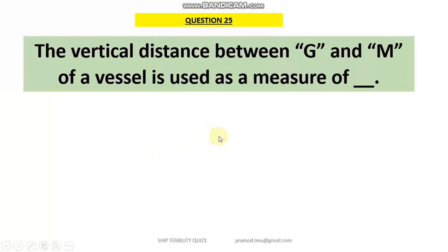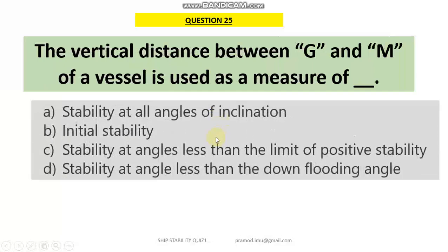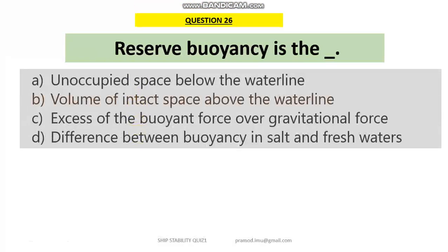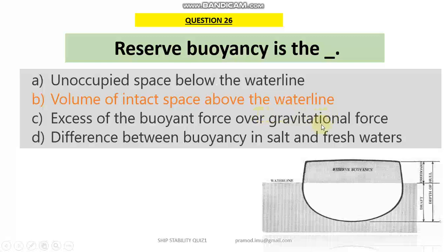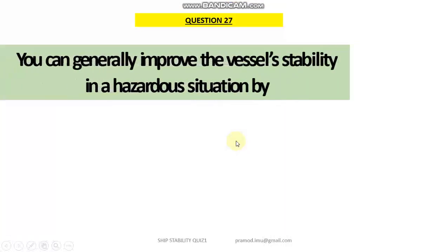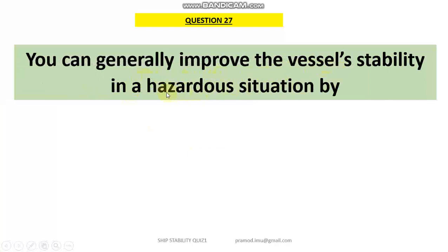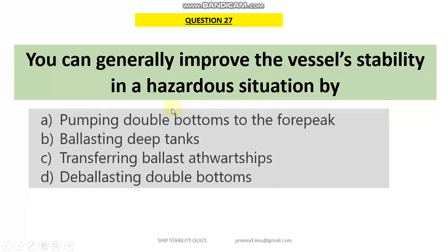Question 25: the vertical distance between G and M of a vessel is a measure of initial stability — GM is taken as a yardstick for initial stability, so B is the answer. Question 26: reserve buoyancy is defined as the volume of intact space above the waterline for a given vessel. Question 27: you can generally improve the vessel's stability in a hazardous situation by ballasting deep tanks — that is one step recommended when a ship is in a hazardous situation.